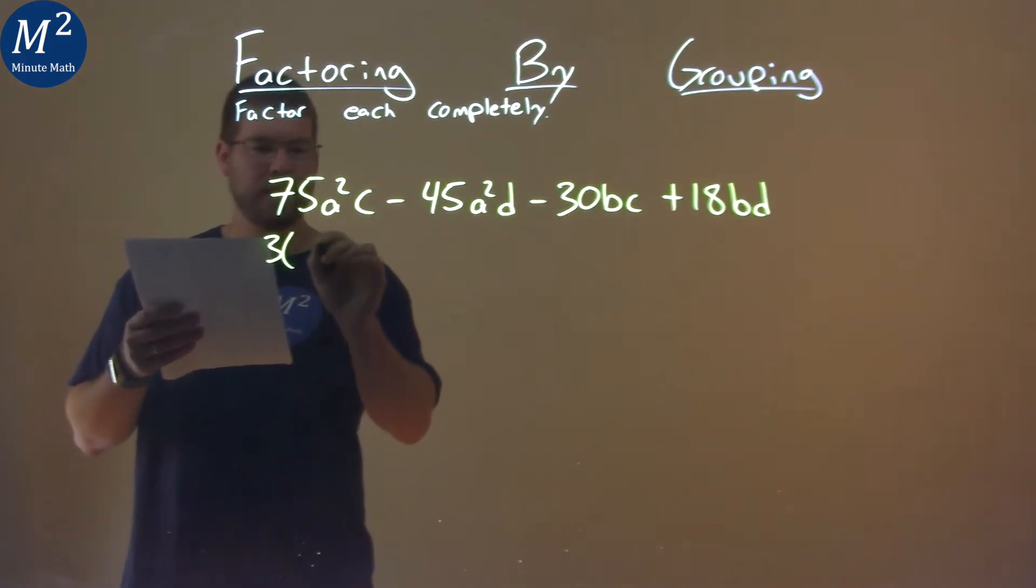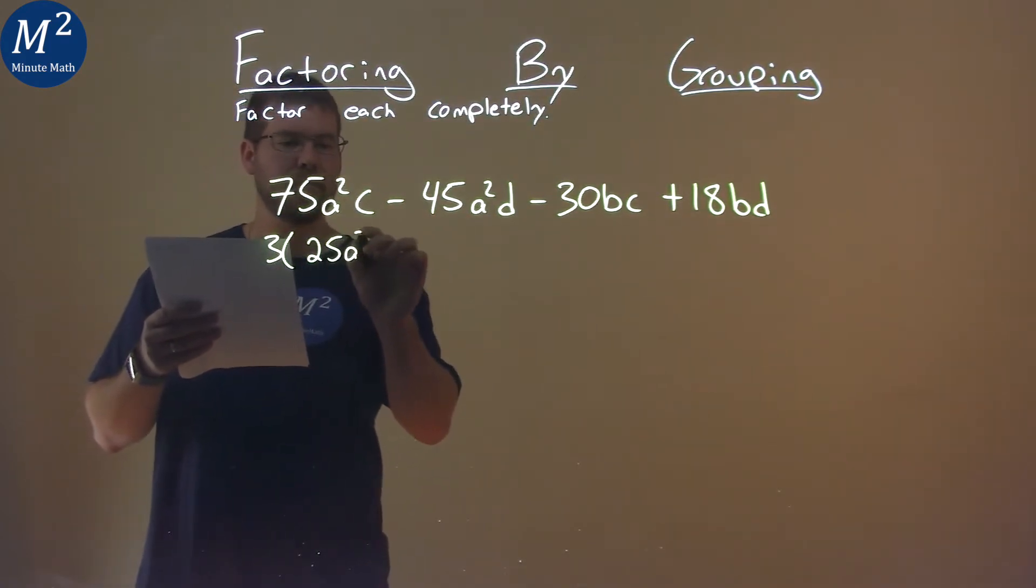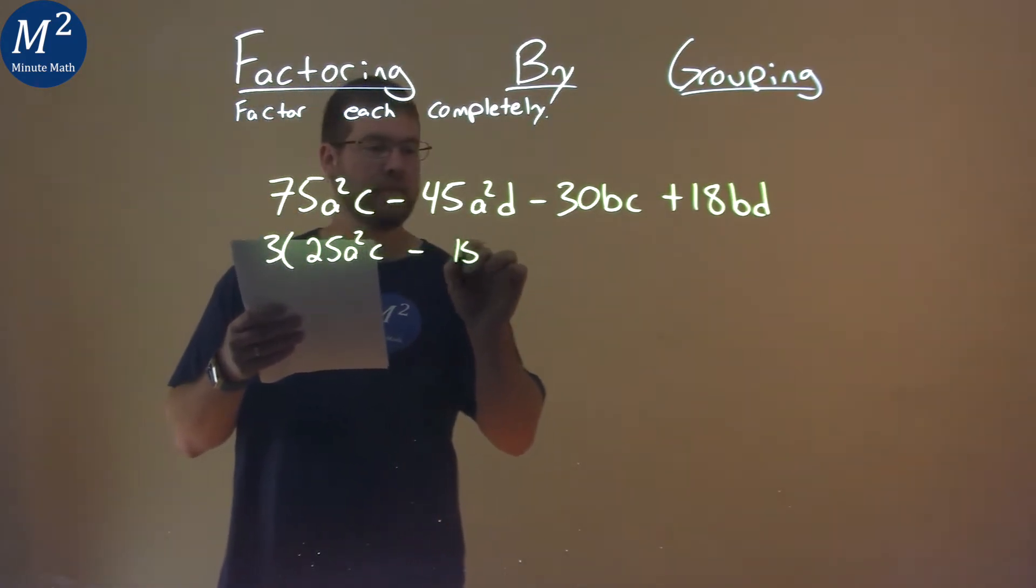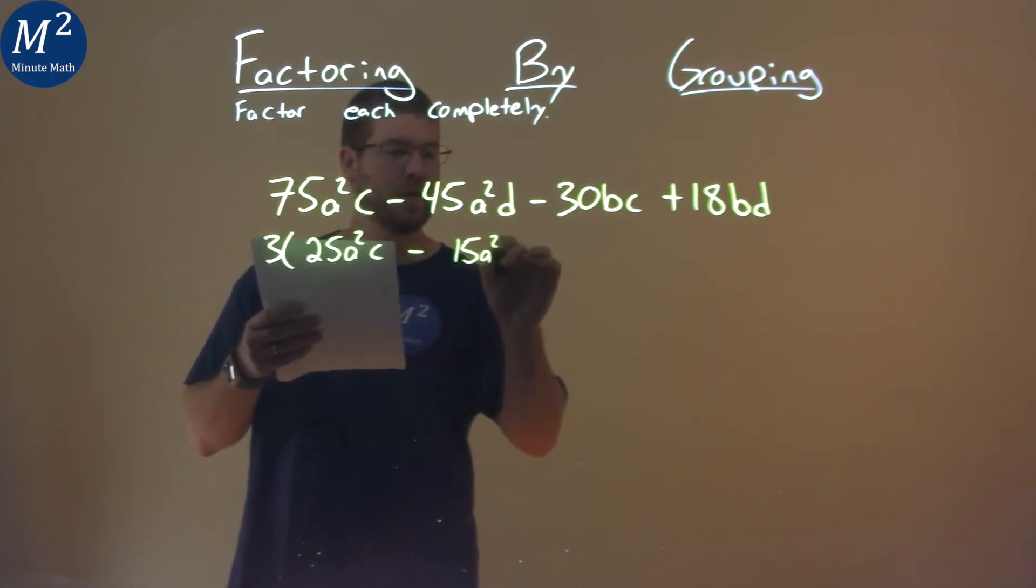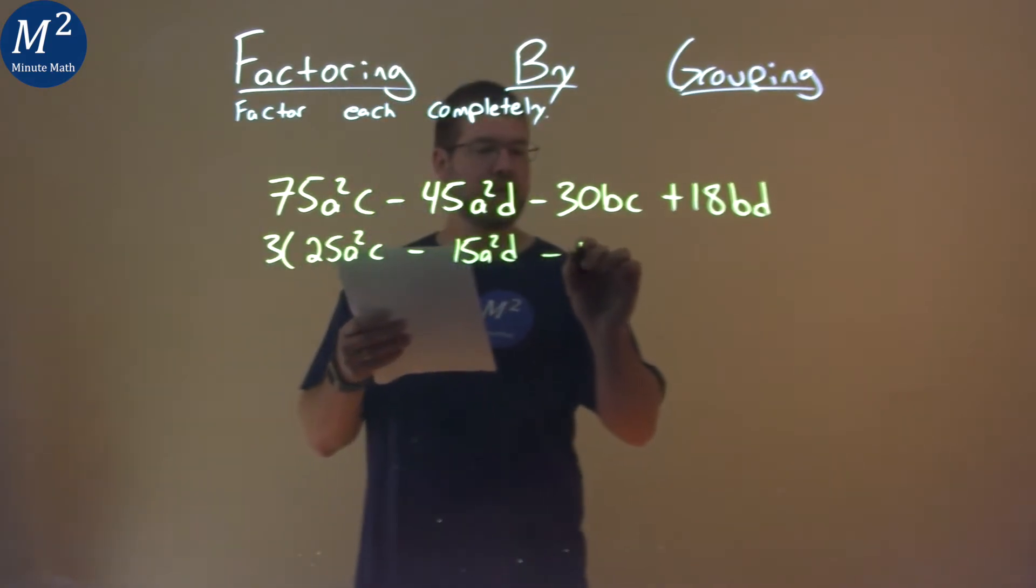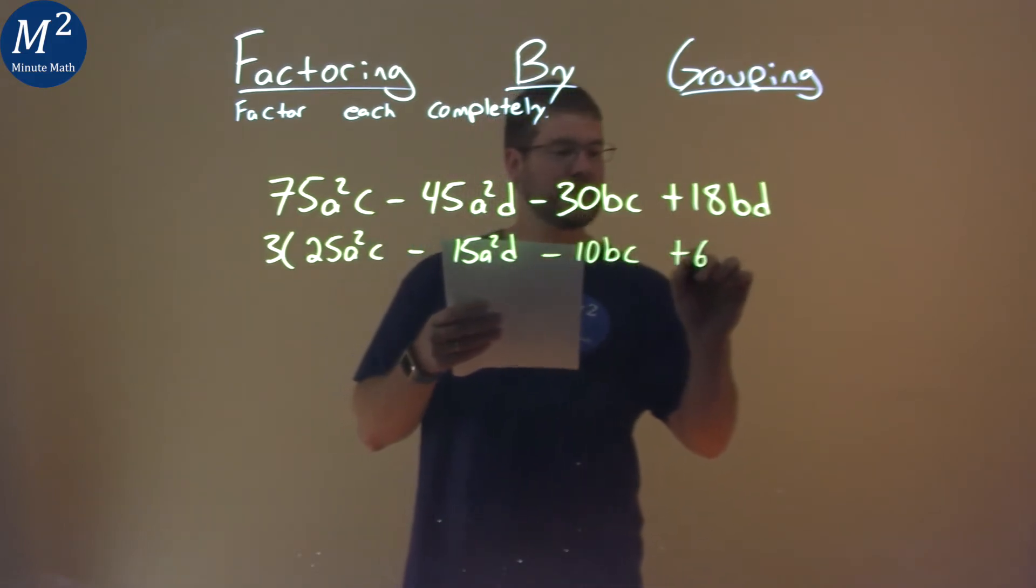I'm left with 25a²c - 15a²d - 10bc + 6bd.